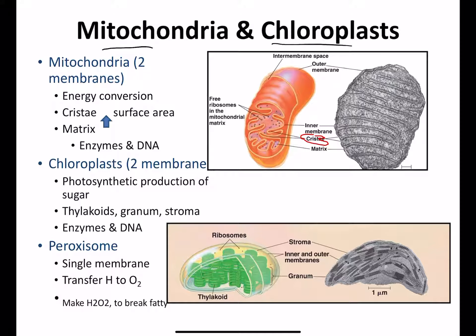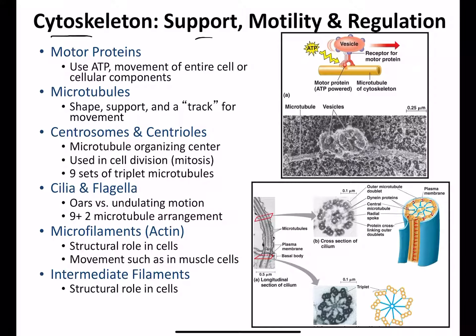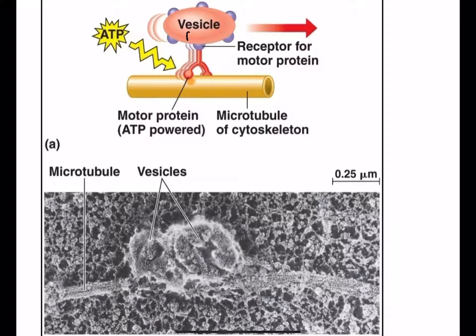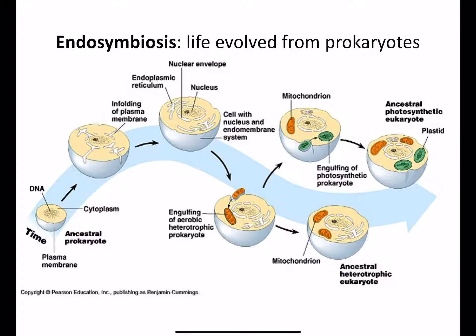Key things about the cytoskeleton: it's specific to eukaryotes. Centrosomes and centrioles — those little churro-looking things — are typically used for mitosis, and that's where your microtubules come out. A vesicle carrying a protein is actually riding on a microtubule. It takes ATP — it is a form of active transport — to ship that protein out.